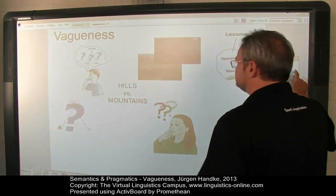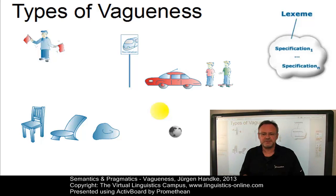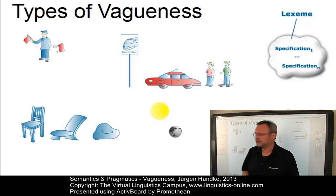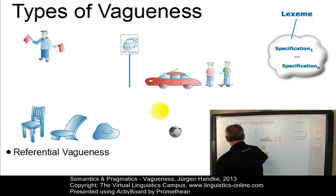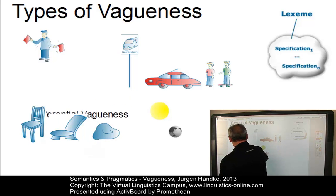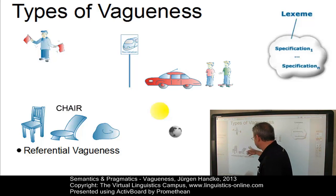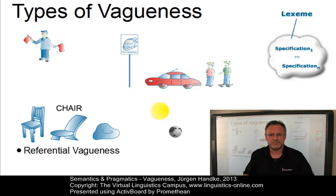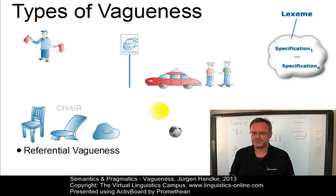Let us look at the main examples of vagueness first. The following types of vagueness can be found in language. For example, there is something we call referential vagueness. For example, consider these chairs. It is arguable whether all three pieces of furniture satisfy the meaning of 'chair'. This is referred to as referential vagueness.